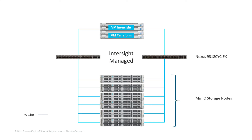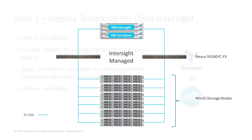Here's the environment we used for our day two operations project. We have a six-node C240 M5 cluster which we used for MinIO. We have two Nexus switches and an HX deployment where we configured a virtual machine for InterSight and a virtual machine for Terraform. Everything is connected via 25 Gigabit Ethernet.